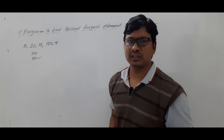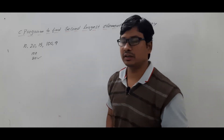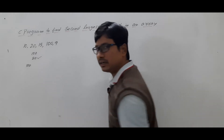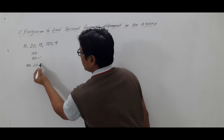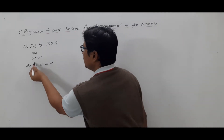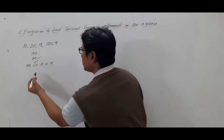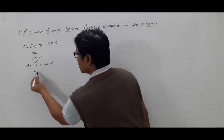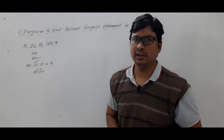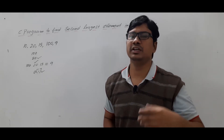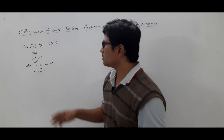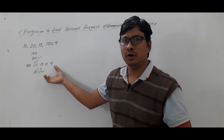People will say: this is very simple, I will perform sorting in decreasing order — you'll get 100, 20, 15, 10, 9 — and the second element will be the second largest. But sorting is more time complex. If you use bubble sort it will take O(n²), and if you use quick sort it will be O(n log n). To avoid this, I want to find the second largest element without using sorting.